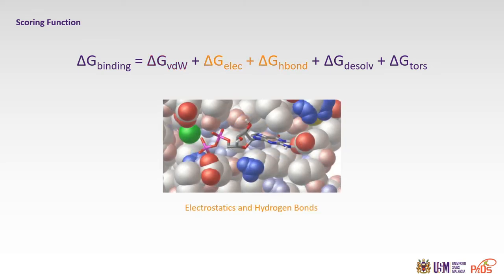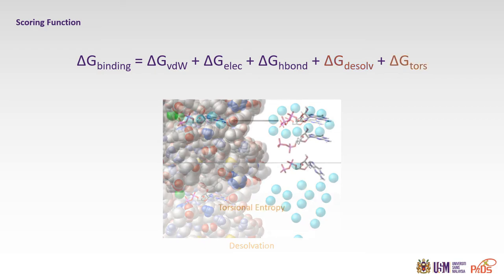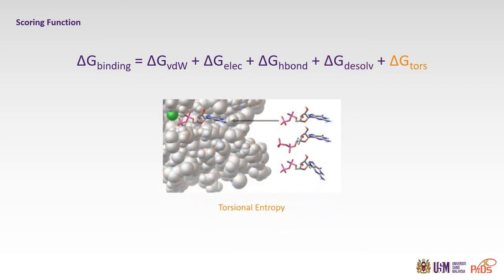Plus the ΔG or the energy difference in the electrostatic and the hydrogen bonds, plus ΔG of dissolvation energy between the bound and the unbound state, and finally energy difference of the torsional energy.